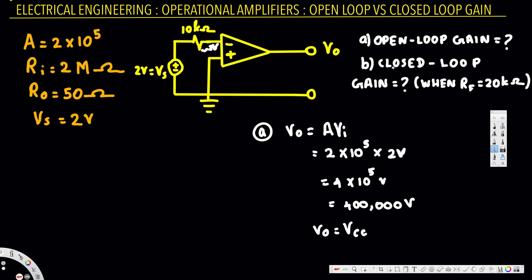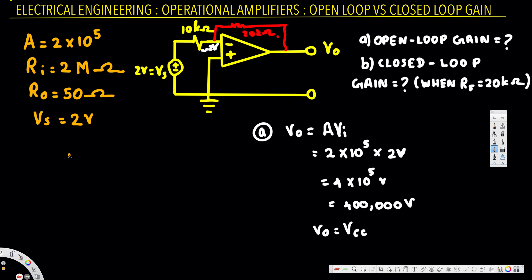Now we will look at what the output voltage will be when we have closed loop gain. The feedback resistance is given as 20 kilohms, so we are going to have a feedback resistance of 20 kilohms connected here.